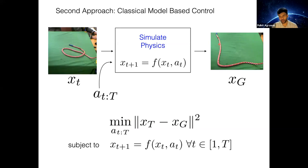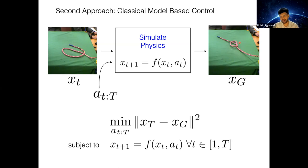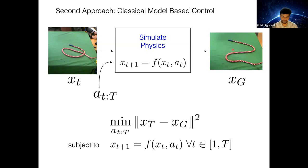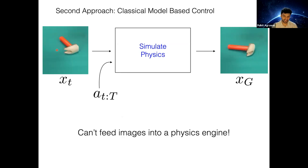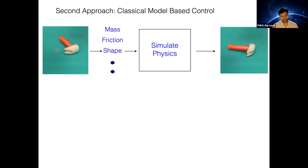This method is good because I might change the goal to something different, or I might have a rope in a different configuration — and the same method should work because physics is general. Similarly, I could change my problem setup and go to pushing objects, and the same method still works. But the issue is that we cannot feed images directly into a physics engine. If I have observations from a camera, I can't feed that directly into a physics engine. I need to first figure out quantities like mass, friction, or shape — essentially doing some form of inverse graphics — so that we can put them into a physics simulator.